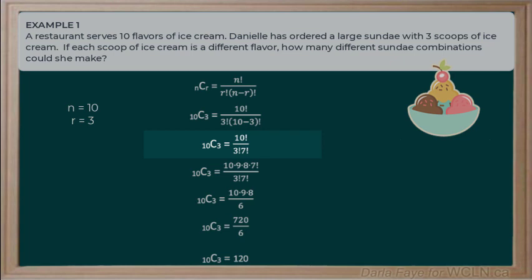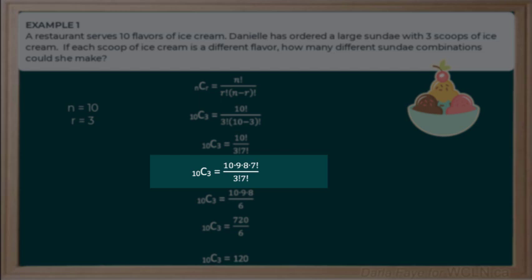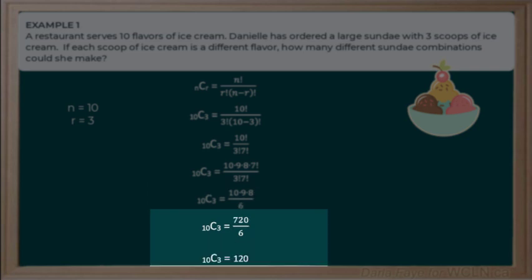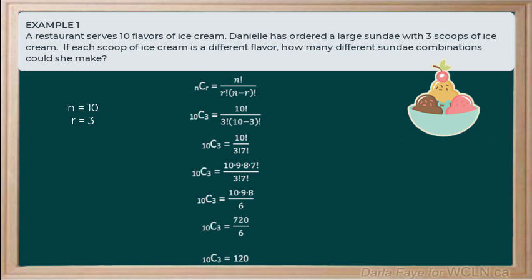Again, we'll start by writing out some factors to see if we can make any cancellations here. So, I'm multiplying 10 by 9 by 7 factorial. And I'm going to stop there because I can see that I can cancel that out with a 7 factorial on the bottom. So, when I do my cancellations and simplify a little bit further, I end up with 10 times 9 times 8 all divided by 6. Which leaves me with 120 possible combinations of ice cream. Now, that sounds delicious.